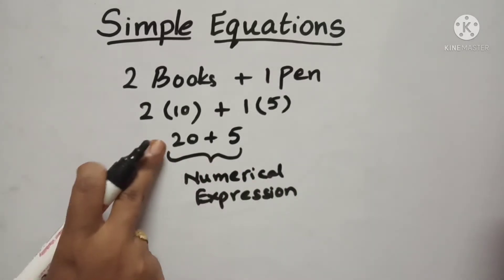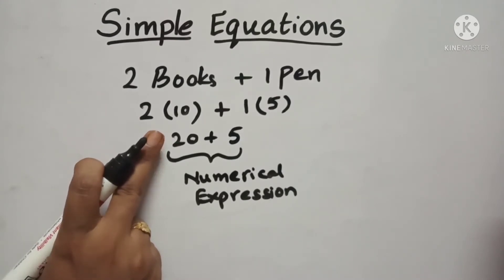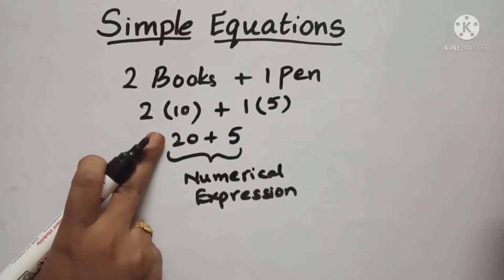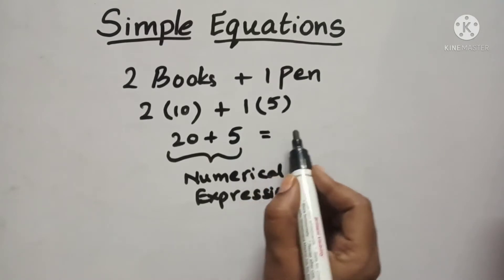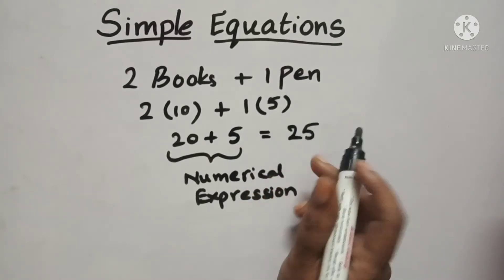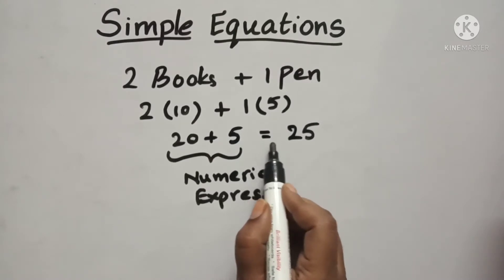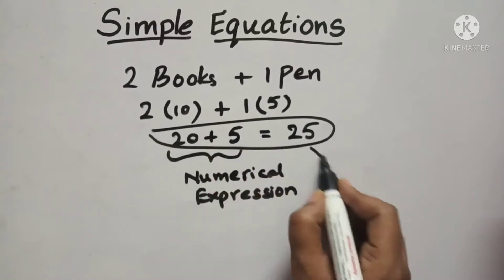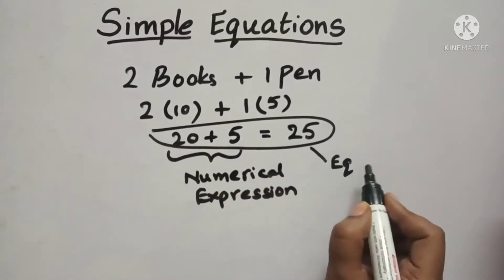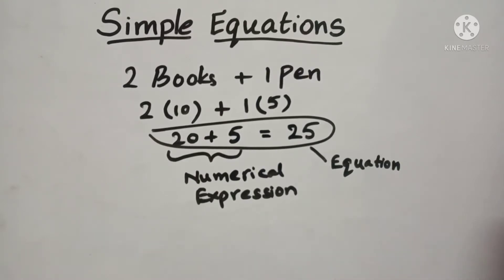Here we can see only numbers are present. When an expression is formed using only numbers, we call it a Numerical Expression. Now the total is 25, so we write it as equal to 25. This is called a Numerical Equation.